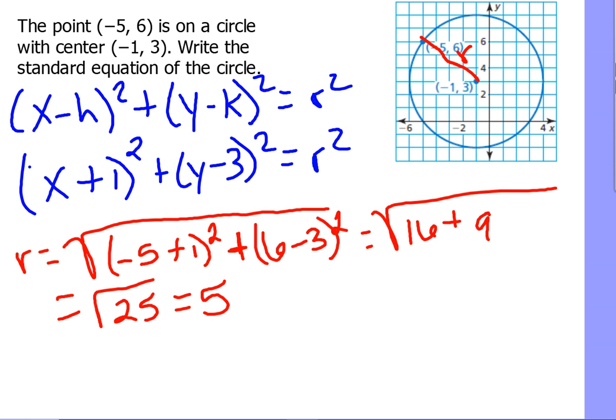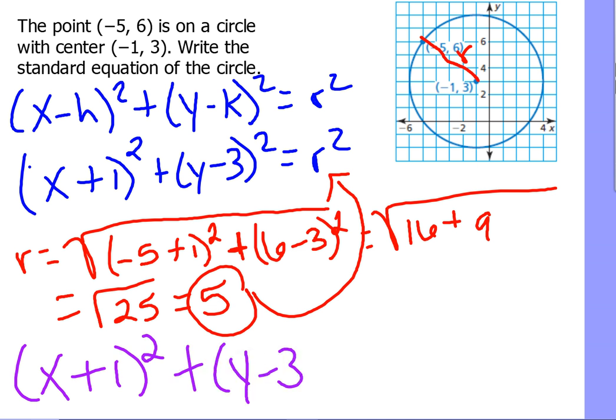Now we will take what we now know about the radius and substitute it right back in. In the end, our complete equation of our circle, we've got to change colors one more time to separate some things. The entire equation of the circle will be x plus 1 quantity squared plus y minus 3 quantity squared equals 5 squared, which is 25.